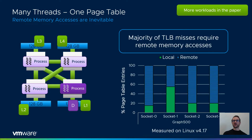The graph on the right shows the distribution of the page table entries for the Graph 500 workload. In our analysis, we found that a majority of TLB misses require remote memory accesses during the page table walk. We refer to the paper for more workloads in this evaluation.